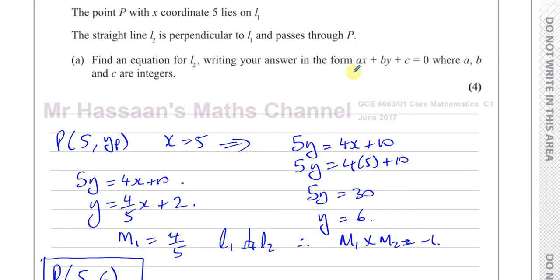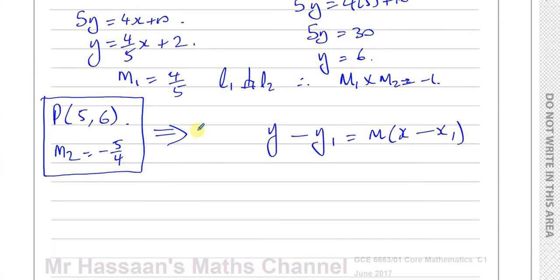We can find the equation of the line by using the formula y minus y1 equals m times x minus x1. And we want it in this form where all the coefficients have to be integers. So let's substitute the values in. You have y minus 6 equals m, which is minus 5 over 4, times x minus 5. Now let's multiply both sides by 4 first to get rid of the fraction. So 4y minus 24 equals minus 5 times x minus 5.